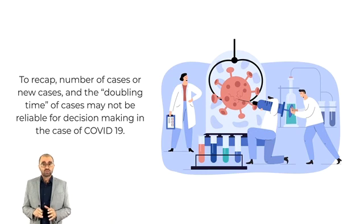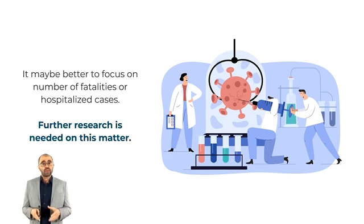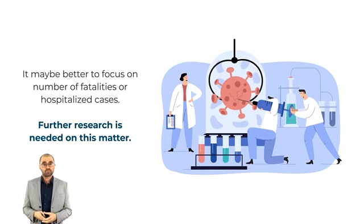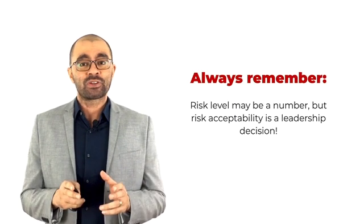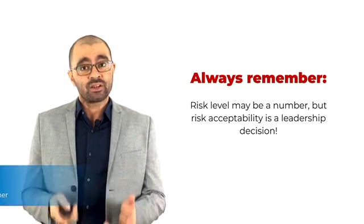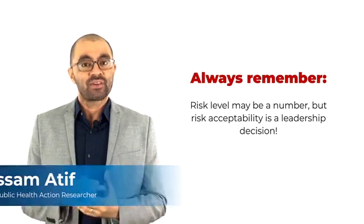To recap: the number of cases or new cases and the doubling time of cases may not be reliable for decision making in the case of COVID-19. It may be better to focus on the number of fatalities or the number of hospitalized cases. Further research may be needed on this matter. Every country should do its own risk assessment and research based on reliable statistics — do not just follow other countries. And always remember: risk level may be a number, but risk acceptability is a leadership decision. Thank you.